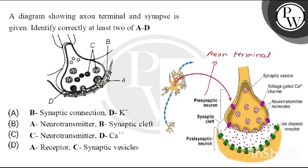The post-synaptic neuron — what do you understand? What is this? Dendrite. So we have the axon terminal of one neuron and the dendrite of another. What is the space between these two? Synaptic cleft.